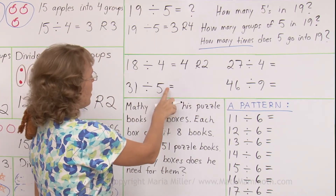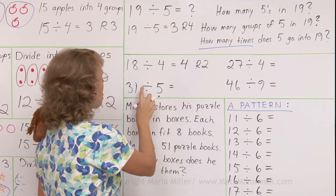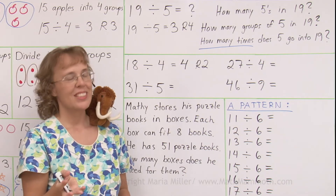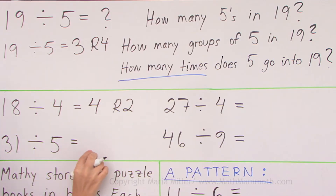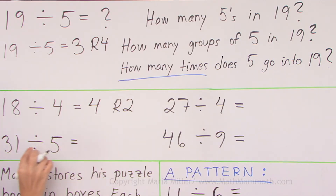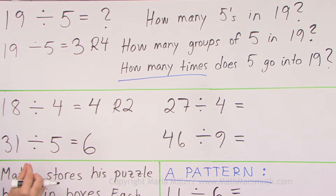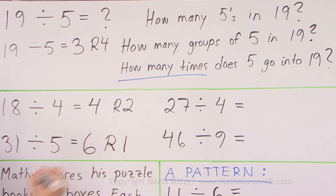How many times does 5 go into 31? Yes — 5 times 6 is 30. And then 30 vs. 31, there's a remainder. The difference is 1.